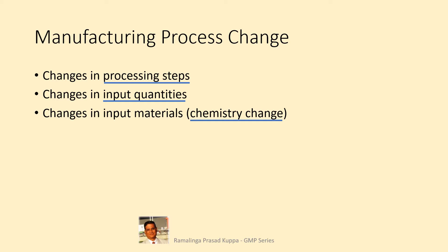The chemistry change: changes in chemistry is a major change. This change needs a detailed risk assessment for establishing the risks and mitigation. Changes in vendor: if the vendor produces the input materials with the same route of synthesis, including the solvents and reagents usage at various stages of process, the change is considered as minor. Otherwise, it will be considered as a major change even if one solvent is changed.